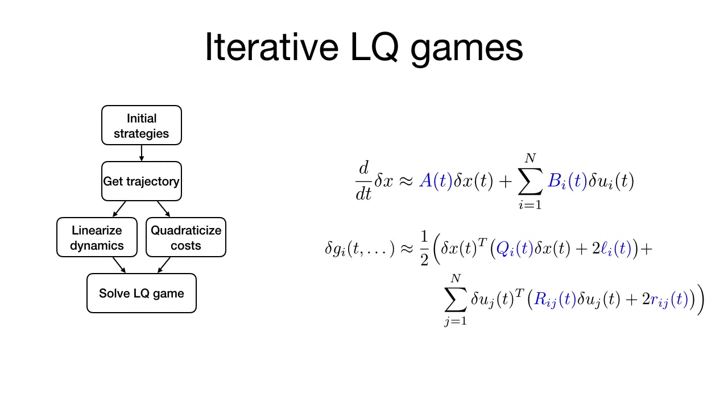The overall complexity is linear in the time horizon and cubic in both the number of players and the overall state dimension. These new strategies encode a new trajectory of the system. We iterate this procedure until convergence. We note that in the single-player optimal control setting, our algorithm reduces to the well-known Iterative Linear Quadratic Regulator.